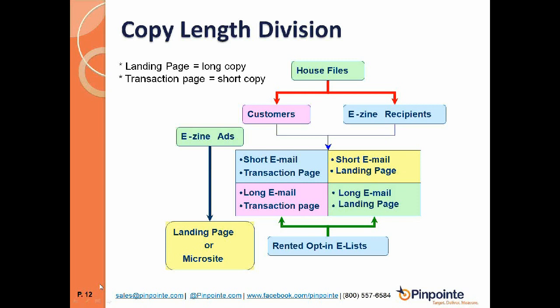Moving to the yellow quadrant: short email and long-copy landing page. If you're selling a product like a paid subscription newsletter, you may need long copy to sell it — normally a four-page letter in direct mail. If you use a short email, it doesn't have enough information to close the deal, so you need longer copy on the landing page. In the bottom-right quadrant, for products requiring a huge amount of copy — like a business opportunity or Tony Robbins-type course — you can have a lot of copy in the email and continue it on the landing page.